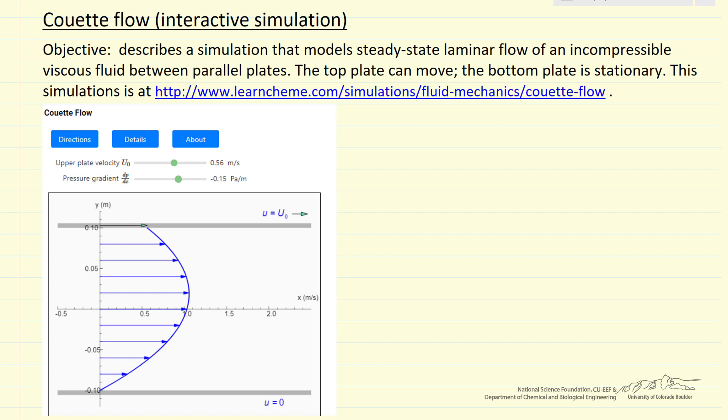I'm going to describe how to use an interactive simulation that models laminar flow between two plates. The bottom plate is stationary with zero velocity, and the top plate is moving to the right. The velocity can be adjusted with this slider.